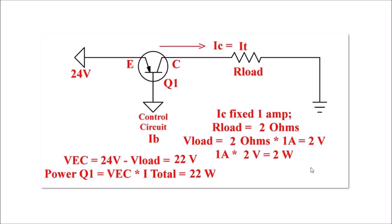Keeping in mind the previous frame, let's change R load to 2 ohms. This is not going to affect IC - it's going to remain fixed at 1 amp. So V load, that's 2 ohms times 1 amp, is 2 volts. 1 amp times 2 volts is 2 watts. Well, guess what happened to all the other power and voltage?